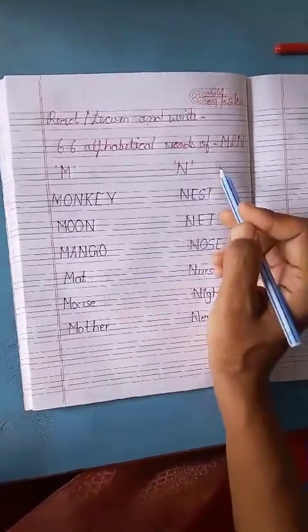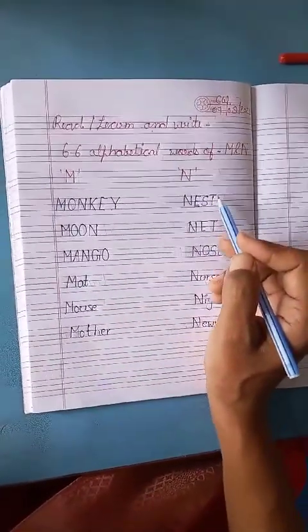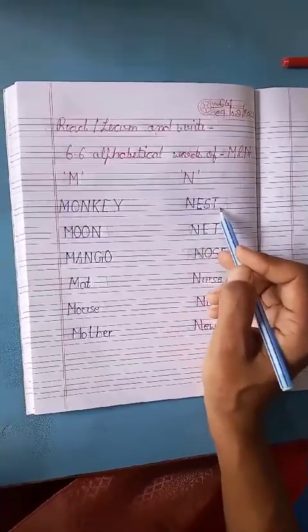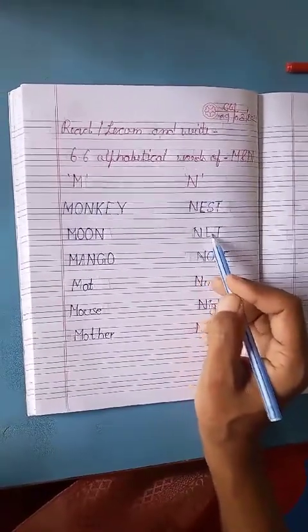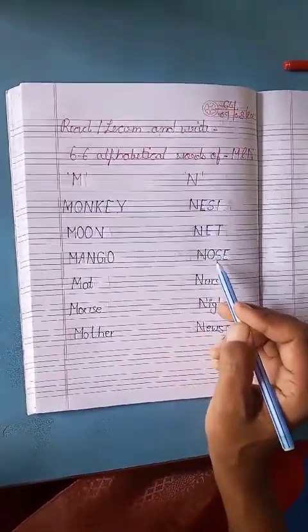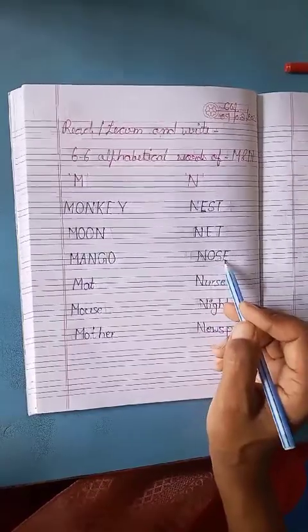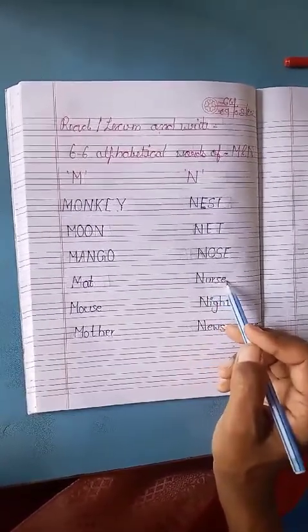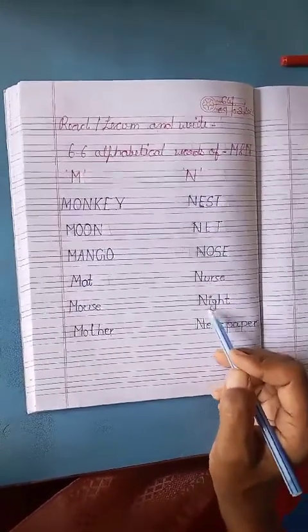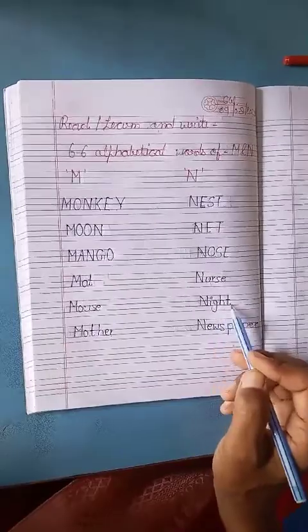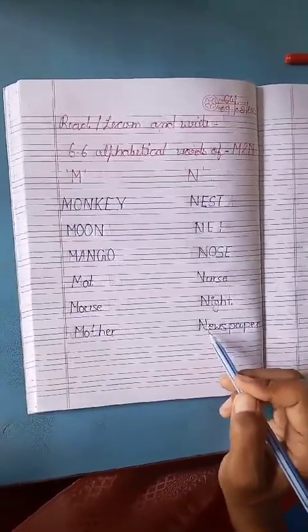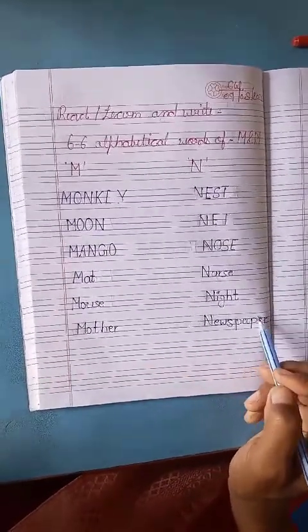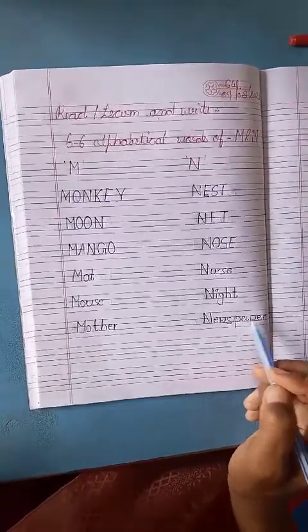6 alphabetical words of N: N-E-S-T, Nest. N-E-T, Net. N-O-S-E, Nose. N-U-R-S-E, Nurse. N-I-G-H-T, Night. N-E-W-S-P-A-P-E-R, Newspaper.